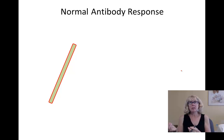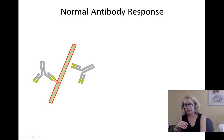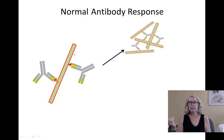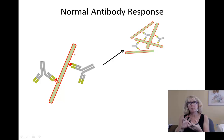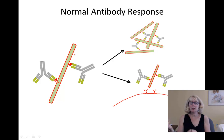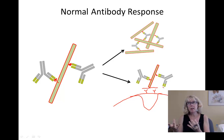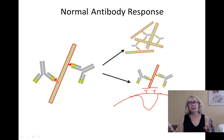In a normal immune response, the body reacts to the virus by making antibodies that bind to the glycoproteins on the surface of the virus. This is useful because antibodies can cause viruses to stick together or agglutinate, which prevents them from infecting cells. The presence of antibodies can also block the virus from binding to receptors on the cell surface, so the cells do not become infected. But this antibody response is actually suppressed by the virus itself, and very few antibodies are normally made.